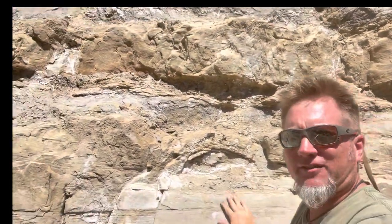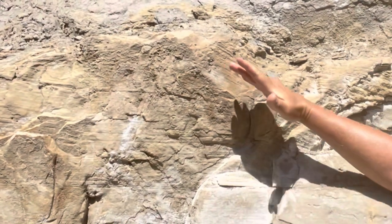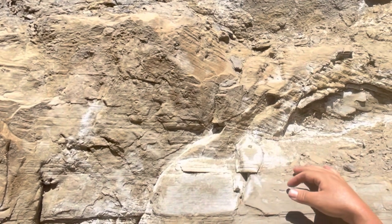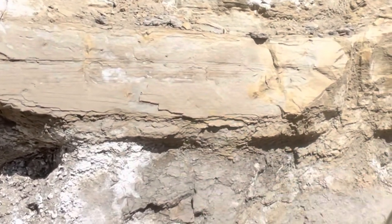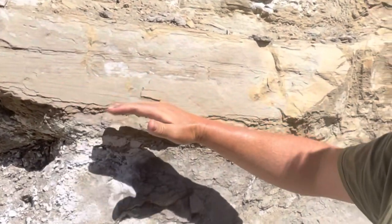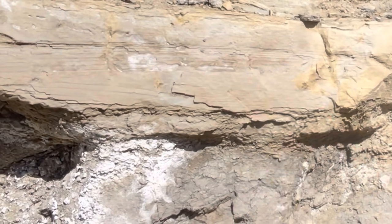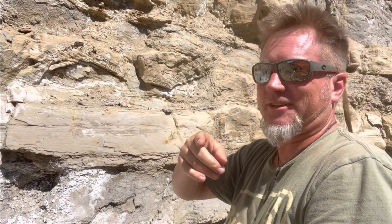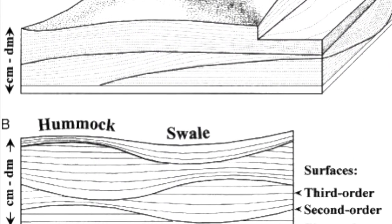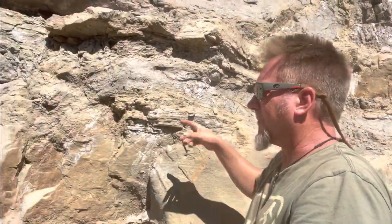There's a thicker sand bed with some crossbedding — not hummocky or swaley, this stuff is traction currents but it's high angle, heading roughly to the east, maybe slightly northeast. Some of this maybe does look hummocky and swaley — you can kind of see an antiform here, typical of a hummock. There's a tiny ophiomorpha in there, made by callianassid shrimp, which like well-oxygenated sandy substrates. So we might have some storm wave influence. Hummocky and swaley is possibly the most controversial sedimentary structure ever, but let's just say this might be hummocky and swaley — we might be seeing storm wave interaction with the bottom.